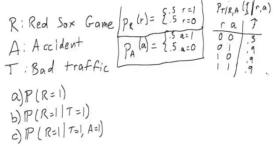Now part A asks us what's the probability that R is 1? Part B says what's the probability that R is 1 given that T is 1? And part C says what's the probability that R is 1 given that T and A are both 1?